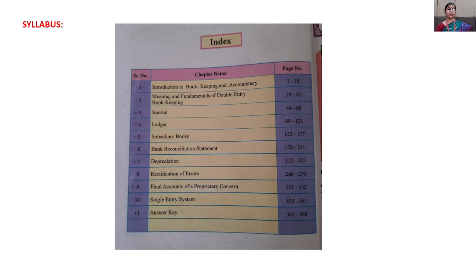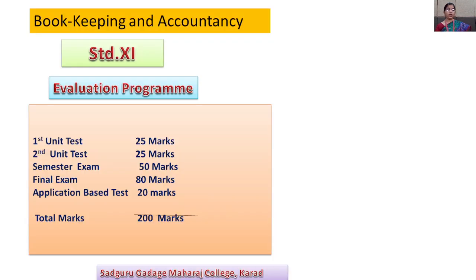The chapters are: third is journal, fourth is ledger, fifth chapter is subsidiary books, sixth chapter is bank reconciliation statement, seventh chapter is depreciation, eighth is rectification of errors, ninth chapter is final accounts of a proprietary concern, and tenth chapter is single entry system.